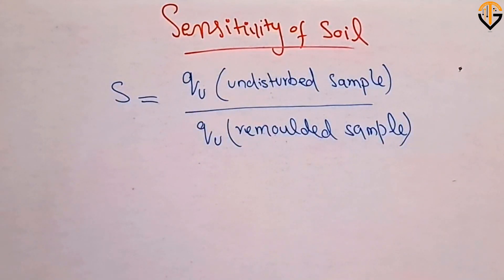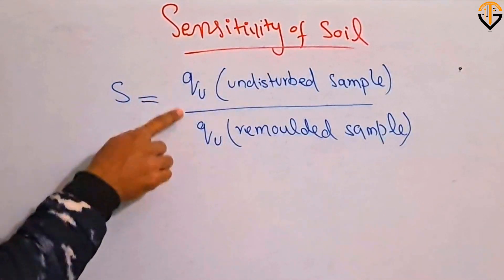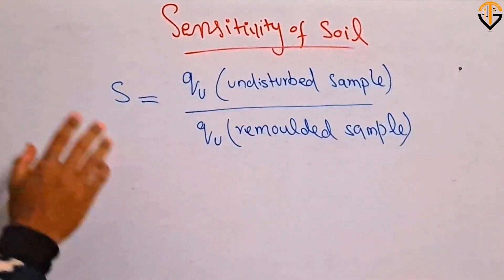The ratio of both of these values is known as the sensitivity of the soil. The greater the ratio of these two values, the greater the problematic soil will be.